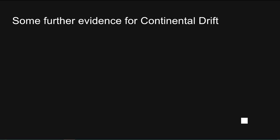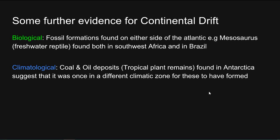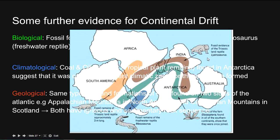Further evidence for continental drift: biological evidence — fossil formations found on either side of the Atlantic, for example the mesosaurus, a freshwater reptile, found both in South West Africa and in Brazil. Climatological evidence — coal and oil deposits, or tropical plant remains, were found in Antarctica, suggesting the continent was once in a different climatic zone. Geological evidence — the same type, age, and formations of rock found on both sides of the Atlantic; for example, the Appalachian Mountains in North America and the Caledonian Mountains in Scotland, which both have igneous and sedimentary rock sequences.